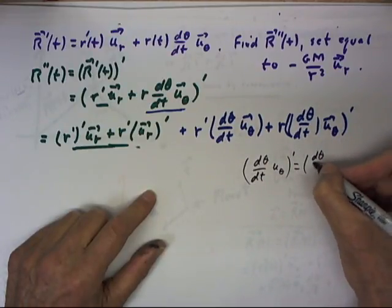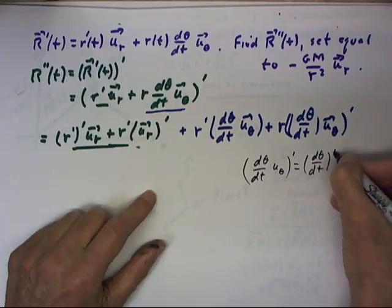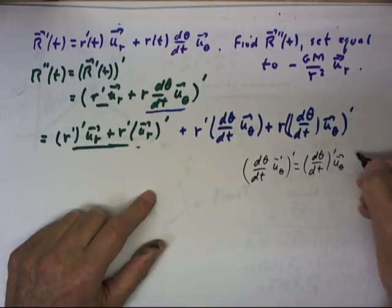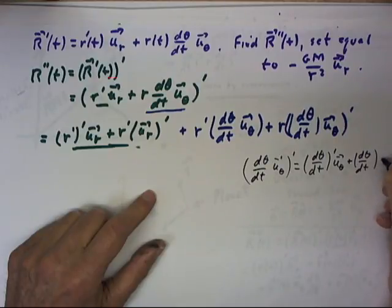It equals d theta dt prime times u sub theta vector plus d theta dt times u sub theta prime.